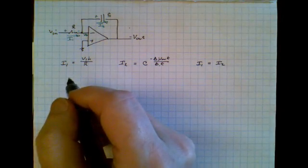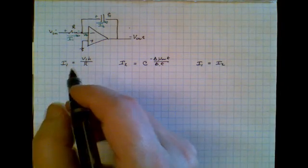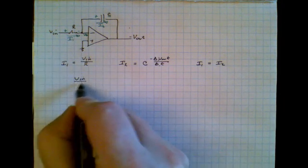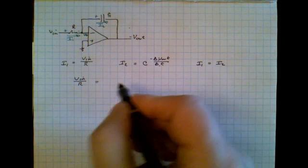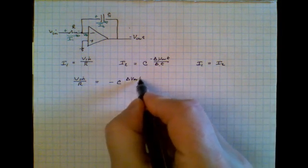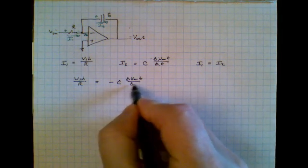Current's got no place else to go but through those two components. So that means that Vin divided by R is equal to minus C delta Vout divided by delta T.